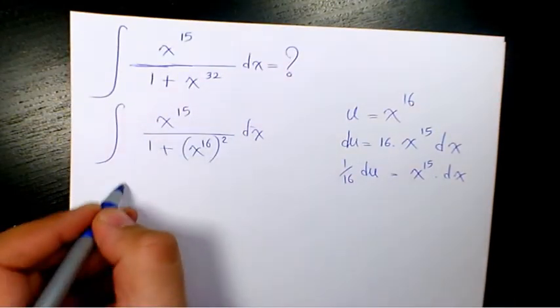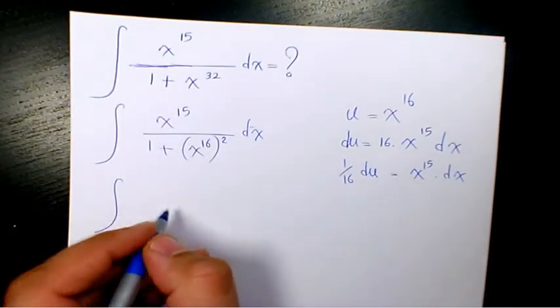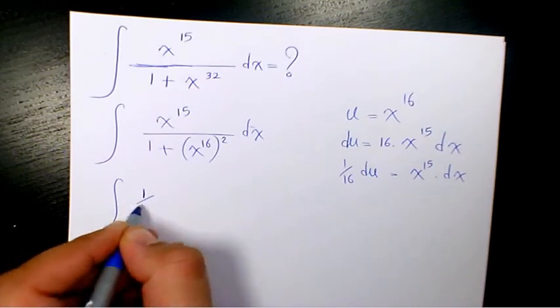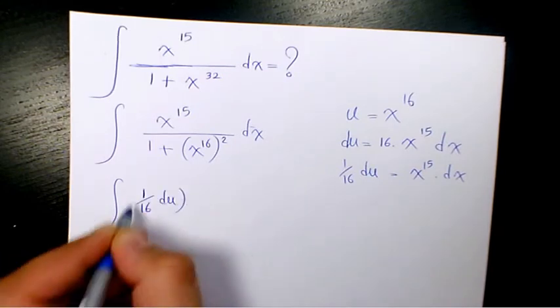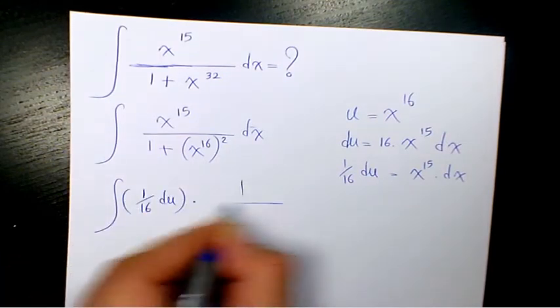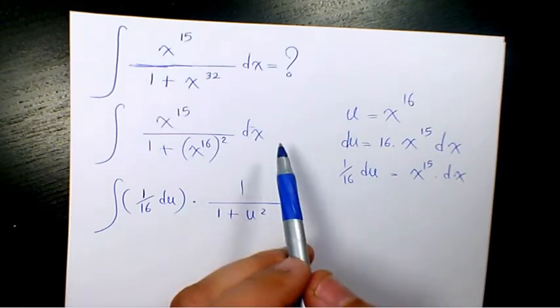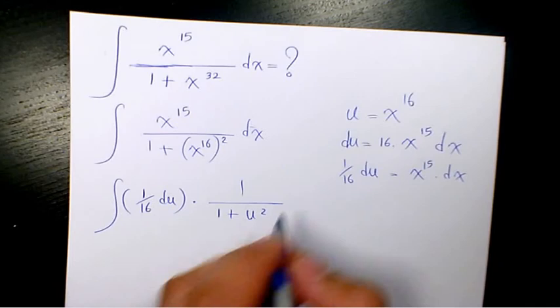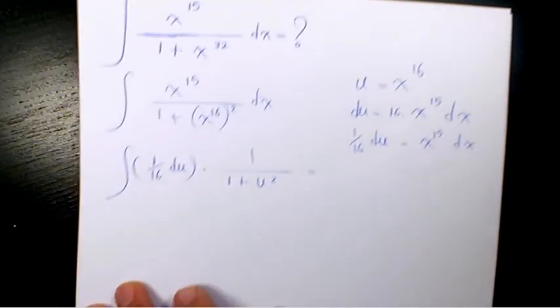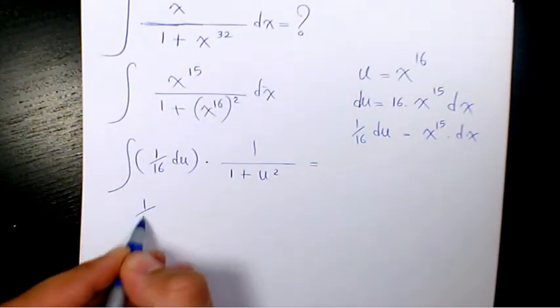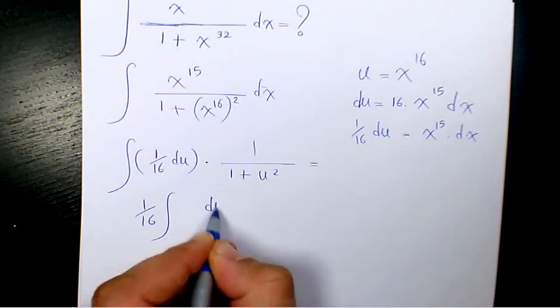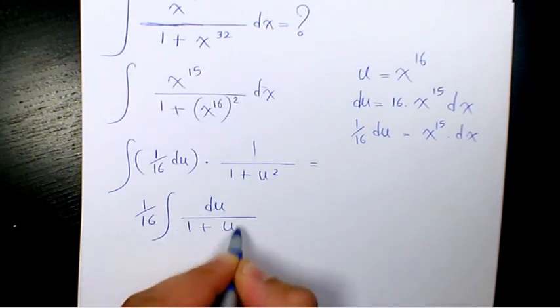When you substitute it there, it's going to be 1 over 16 du times 1 over 1 plus u squared, which equals 1 over 16. You take it out and you end up having du over 1 plus u squared.